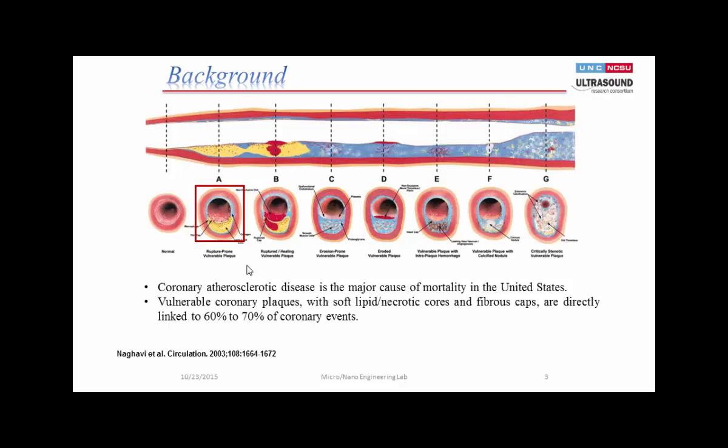This is background that many of us have already gone through. Basically, the idea is we want to look at some vulnerable plaques — thin fibrous caps wrapped around a lipid core. That is one of the major causes of mortality in coronary disease.